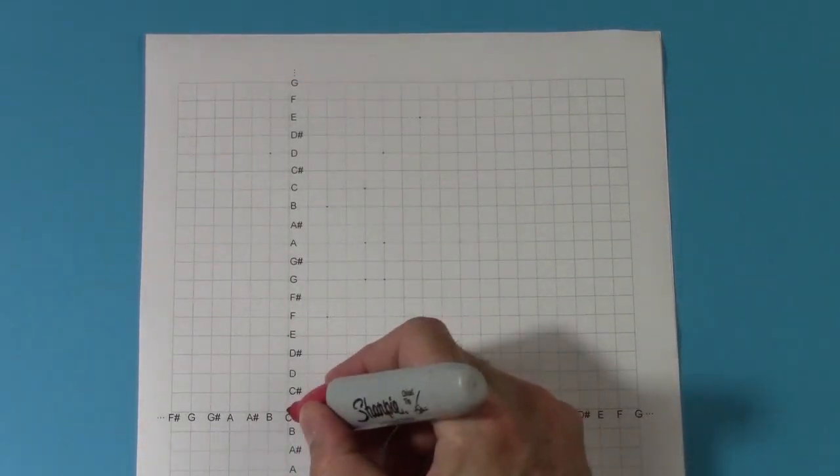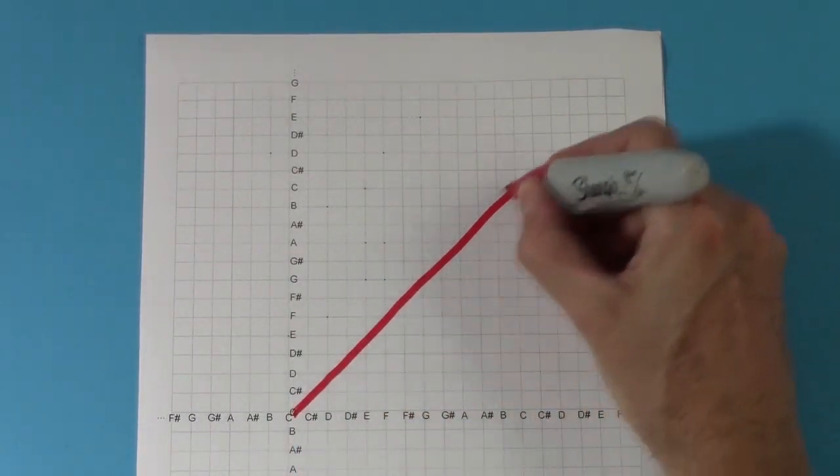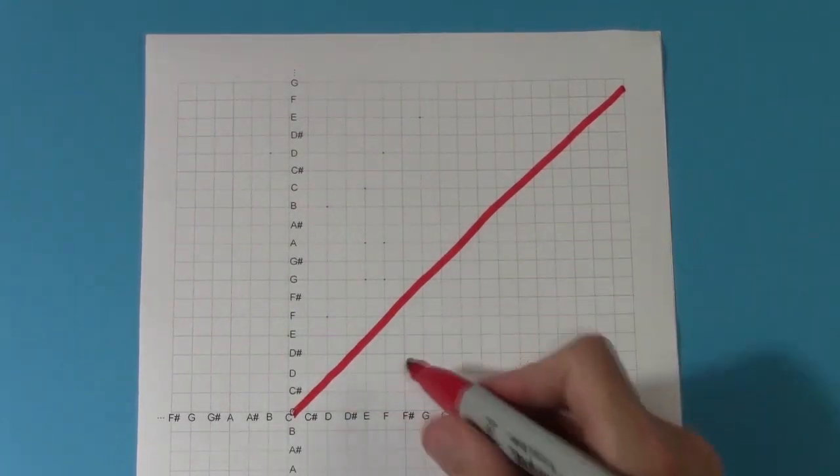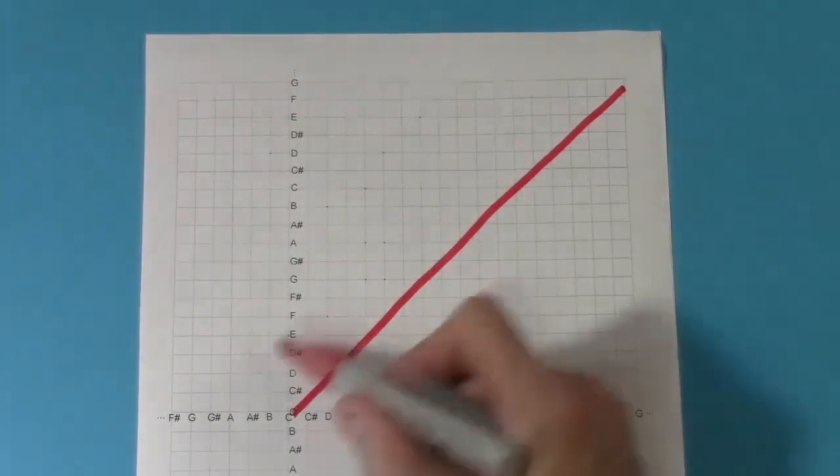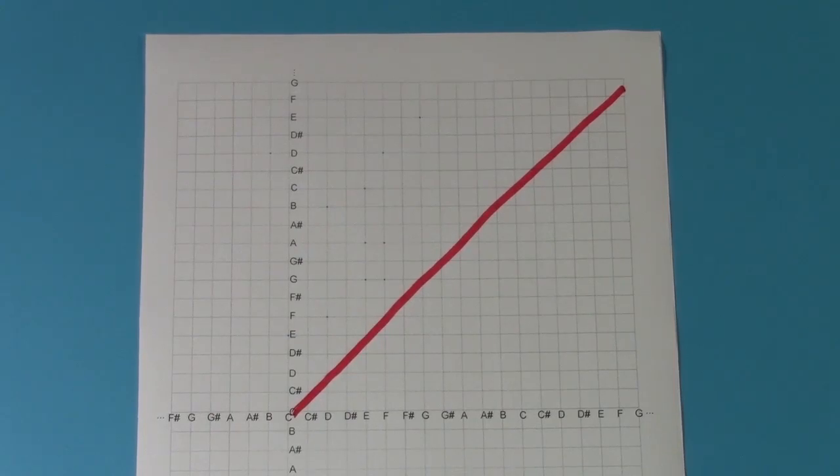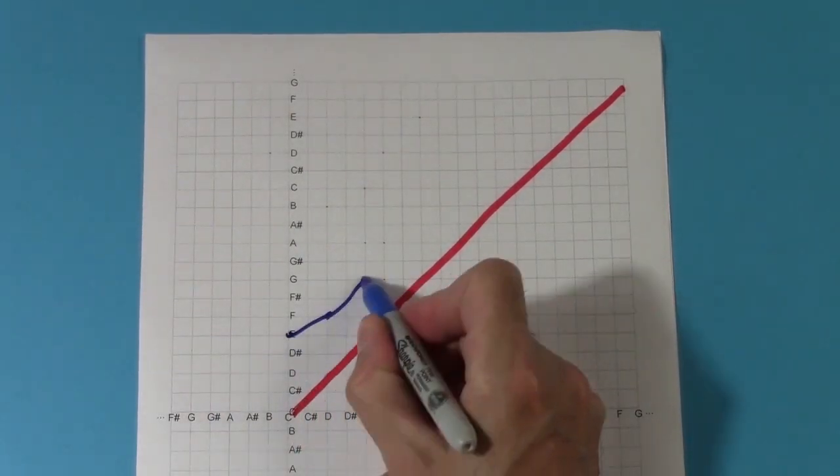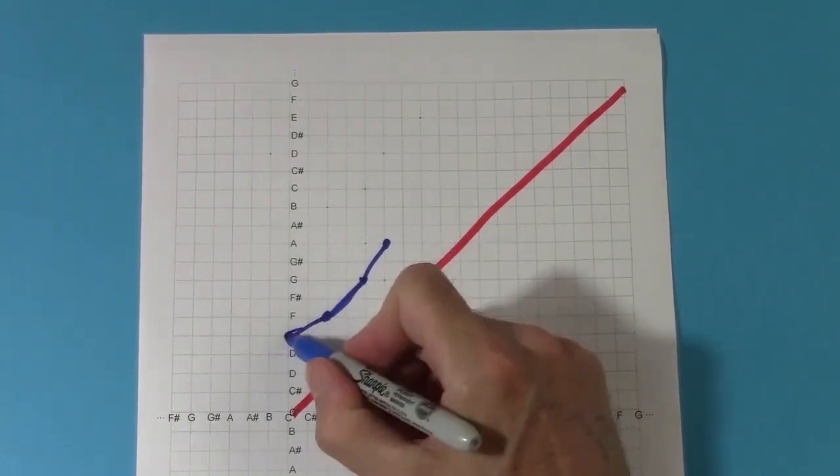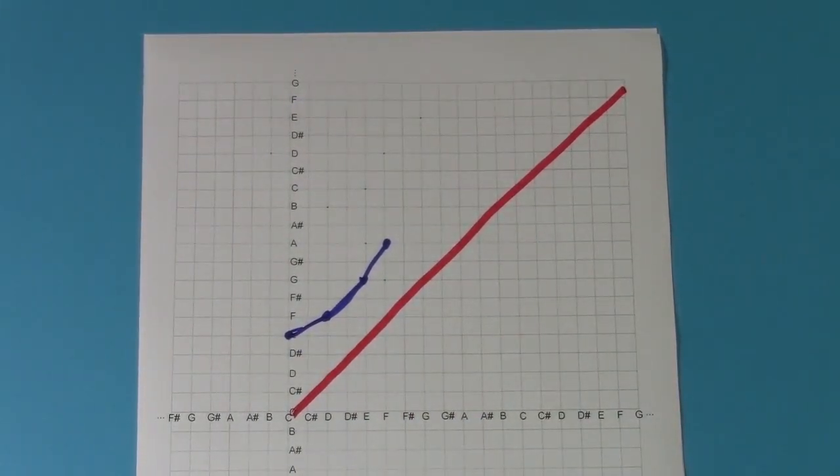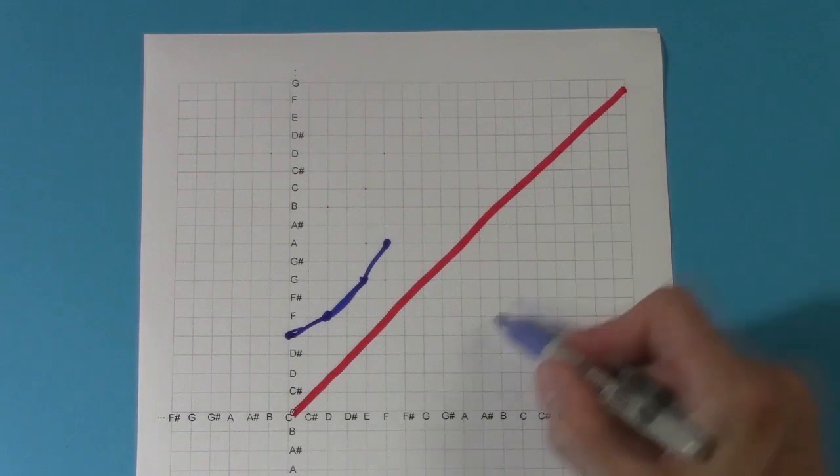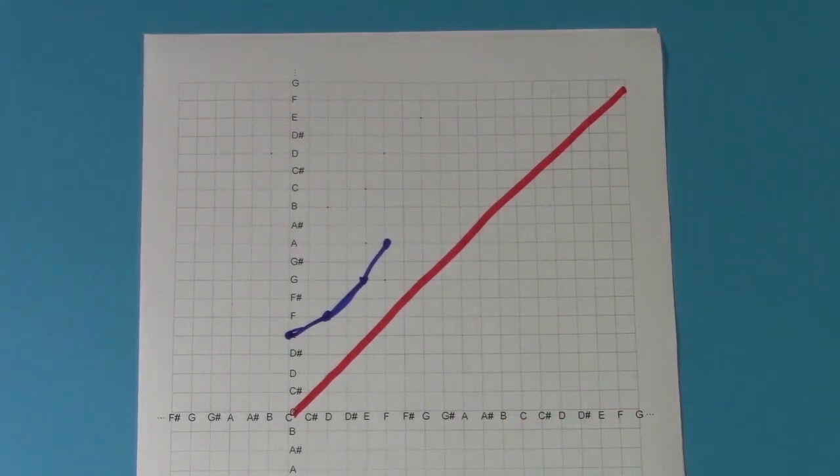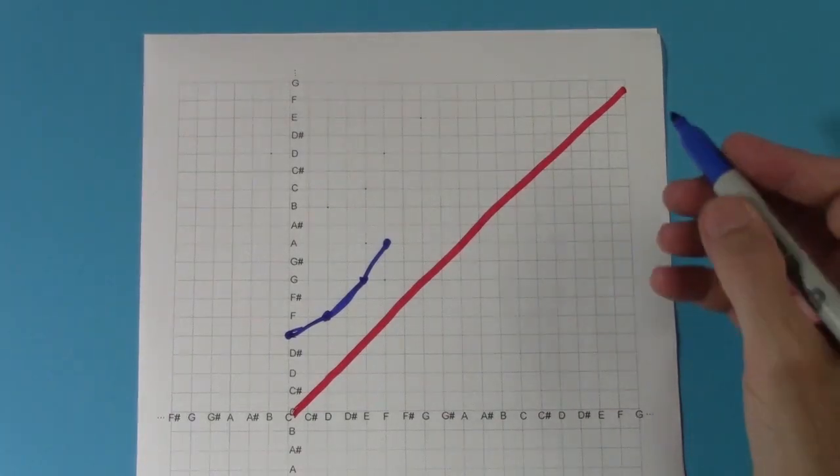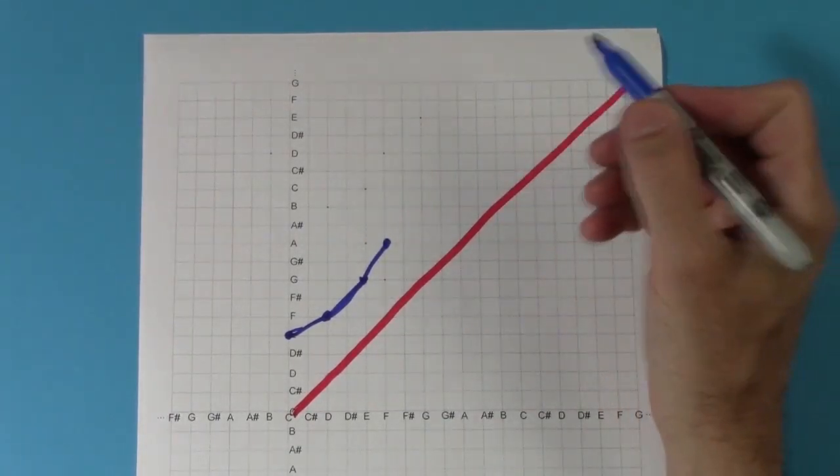The main diagonal, where x equals y, represents unison chords. A diagonal y equals x plus a constant represents two voices a constant distance apart, like these parallel thirds. Parallel motion is literally parallel to the main diagonal. Diagonals further from the center correspond to a larger difference in the pitches between the two voices, like these parallel sixths.